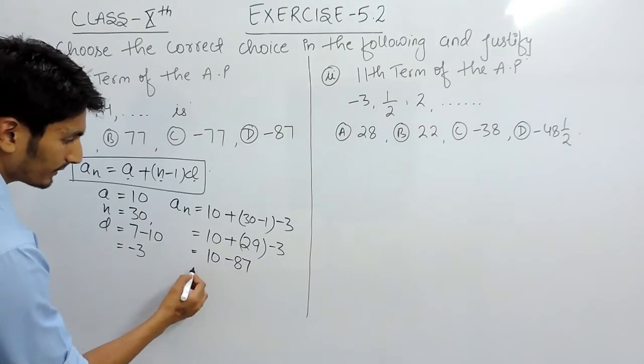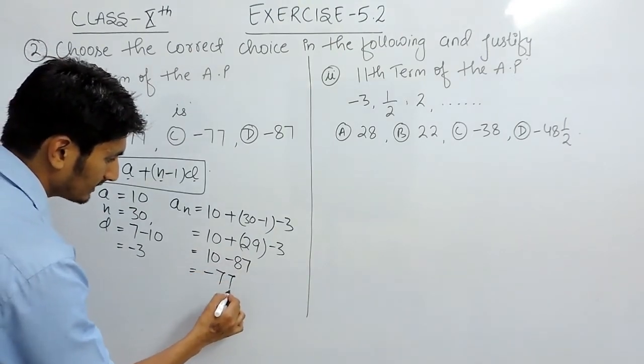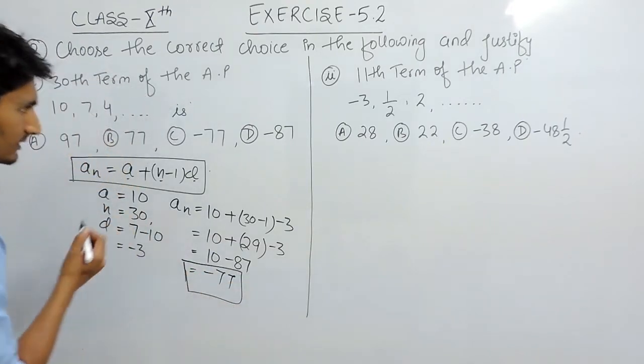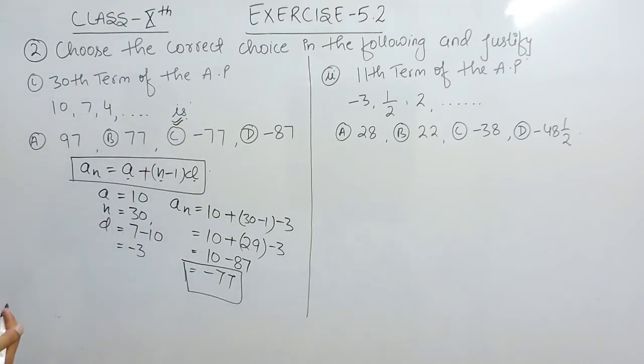And these are plus-minus values, and plus-minus is minus, so this will be -77. So our 30th term is -77, so C would be the correct answer.